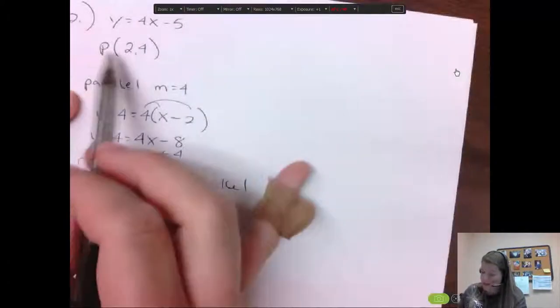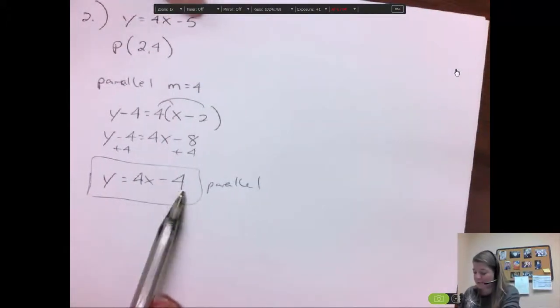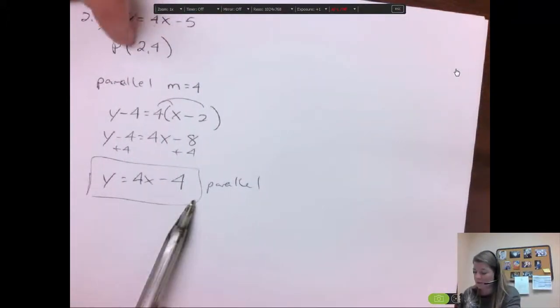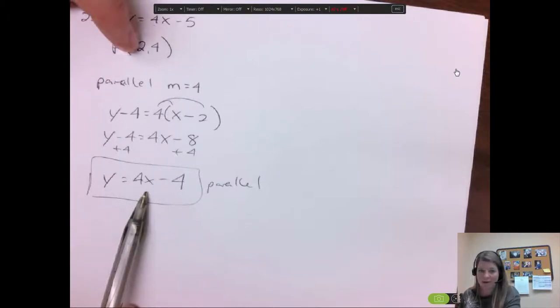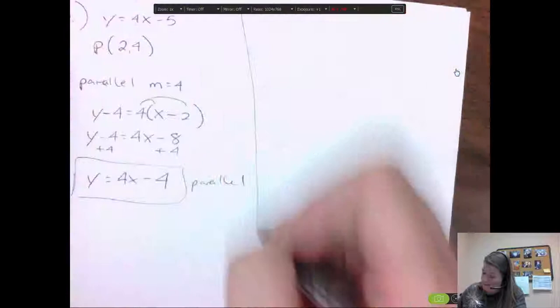This one's parallel to this one. See how they both have the same slope, but they have different intercepts. This one goes through this point. This one here goes through this point here. Okay? So they're parallel and it goes to that point. What if you were asked for perpendicular?